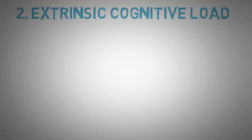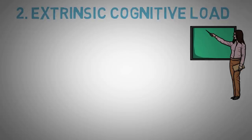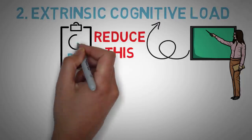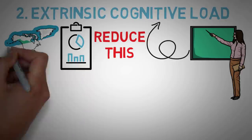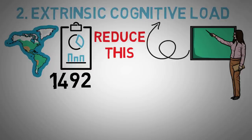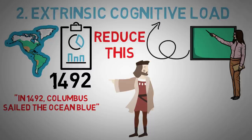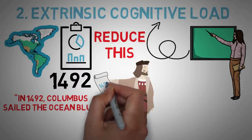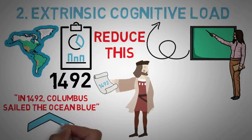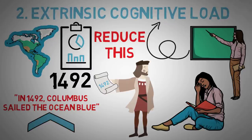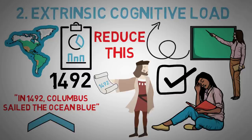Secondly, we have extrinsic cognitive load. This is the method in which the information is taught to students. If the method is really distracting or ineffective, it increases extrinsic cognitive load. The goal of teachers and mentors is to reduce extrinsic cognitive load and communicate information in a simple, effective way. For example, to teach that Christopher Columbus arrived in the Americas in 1492, one method is the rhyme: 'In 1492, Columbus sailed the ocean blue.' Another is showing students a painting of Columbus sailing toward the Americas with a scroll saying 1492. The first method has far less cognitive load — it's easier to remember, already organized, and students commit it to long-term memory faster.